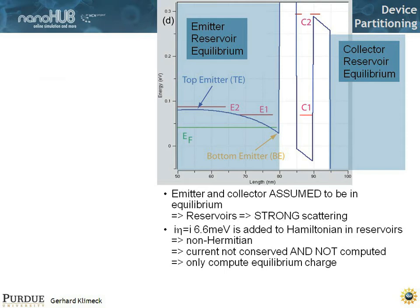The interesting part is that this iη, this optical potential, is added to the Hamiltonian in the reservoirs. That makes this Hamiltonian non-Hermitian. And if you computed current in here, if you did do that, current would not be conserved. In fact, you would be losing carriers. But we don't compute current there. We just do Green functions. And we only compute the equilibrium charge. And we don't lose charge.